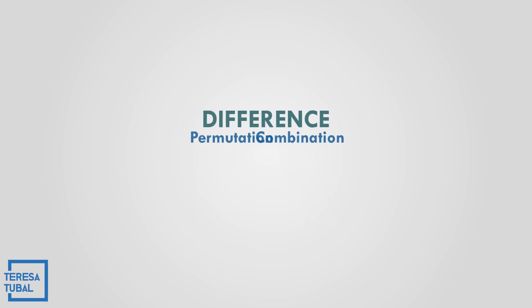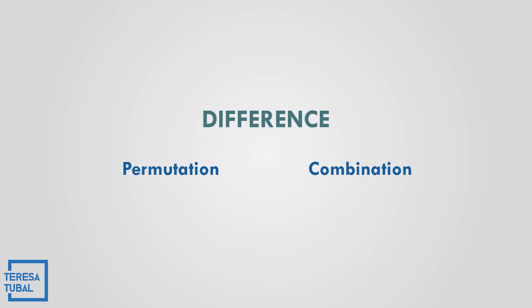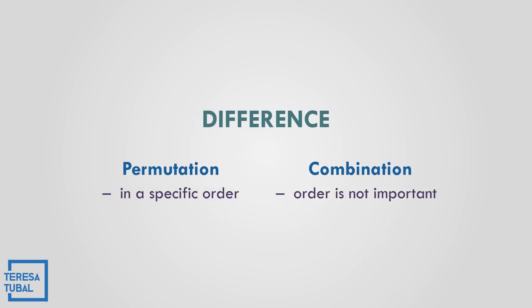Let us see the difference between permutations and combinations. In a permutation, the arrangement must be in a specific order, while in a combination, the order is not important.